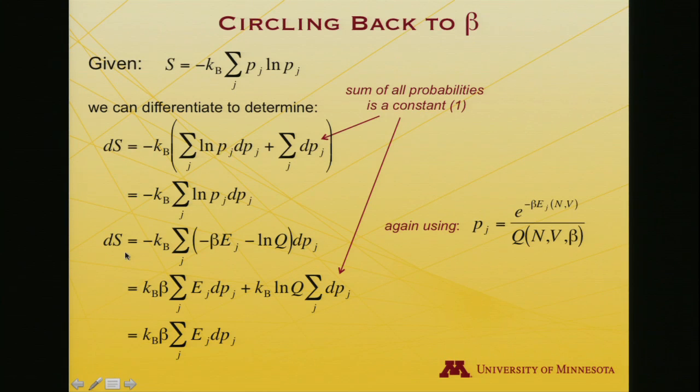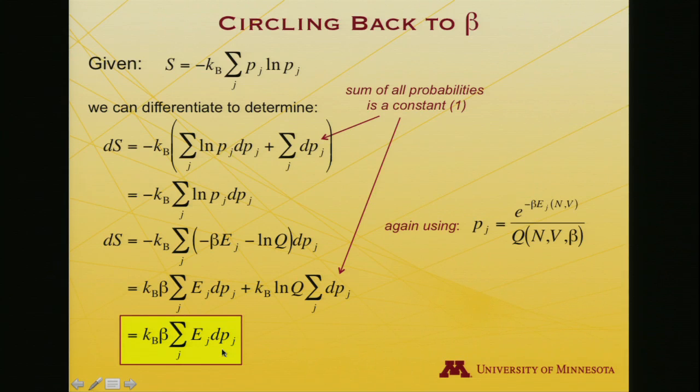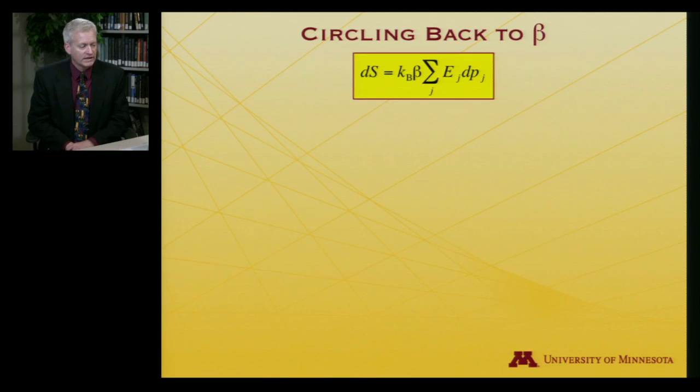And I'm left with ds is equal to this expression, kb beta sum over j ej dpj. Let's keep that in mind, and we're running out of space on this slide, so move on to the next one.